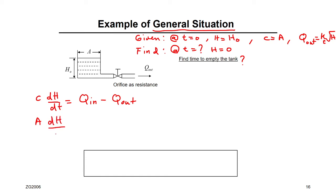Applying this to the problem: A·dH/dt = Flow in minus Flow out. There is no flow in, so Flow in = 0. Flow out is the orifice function K times the square root of H.